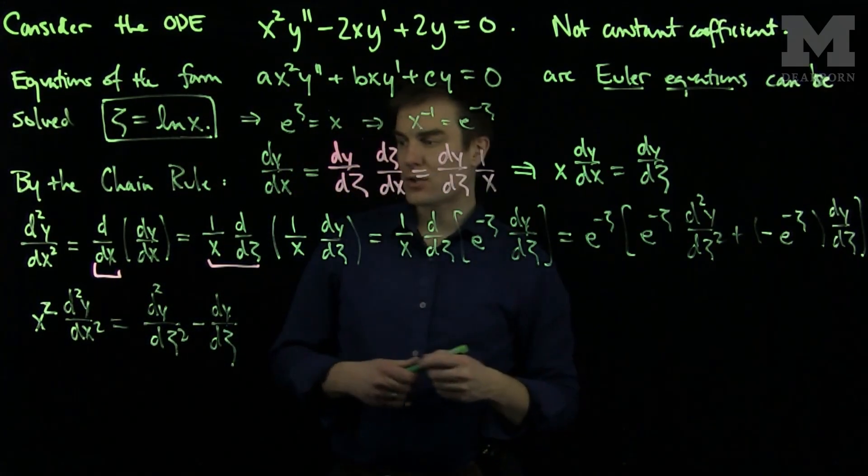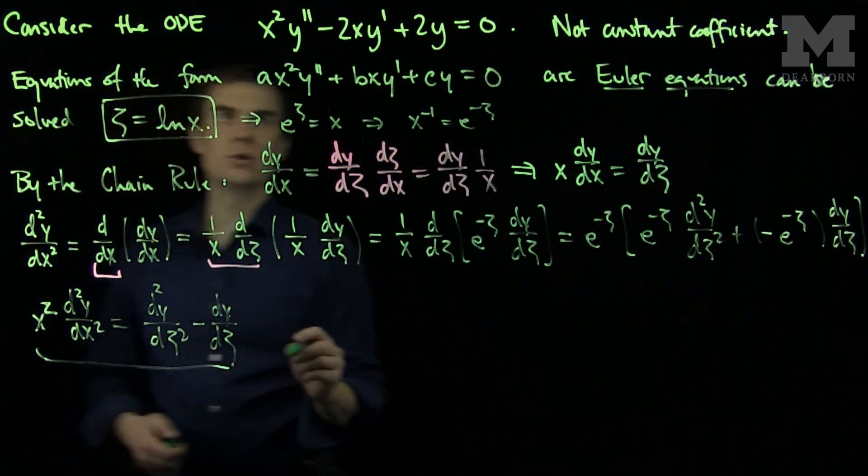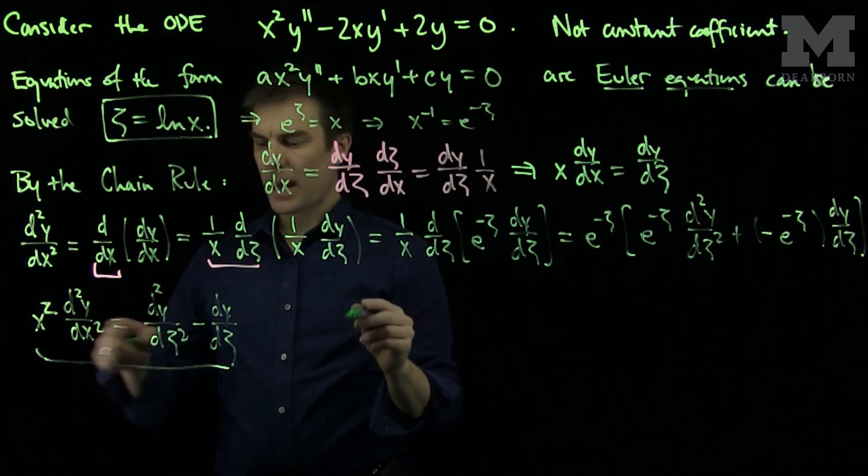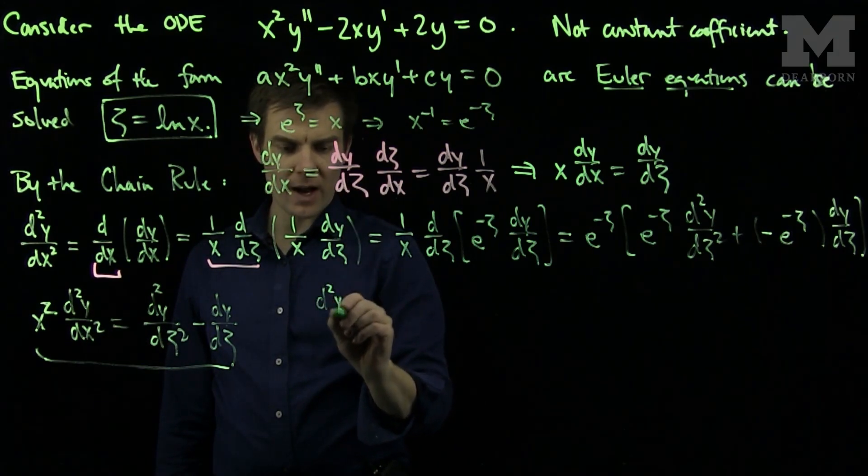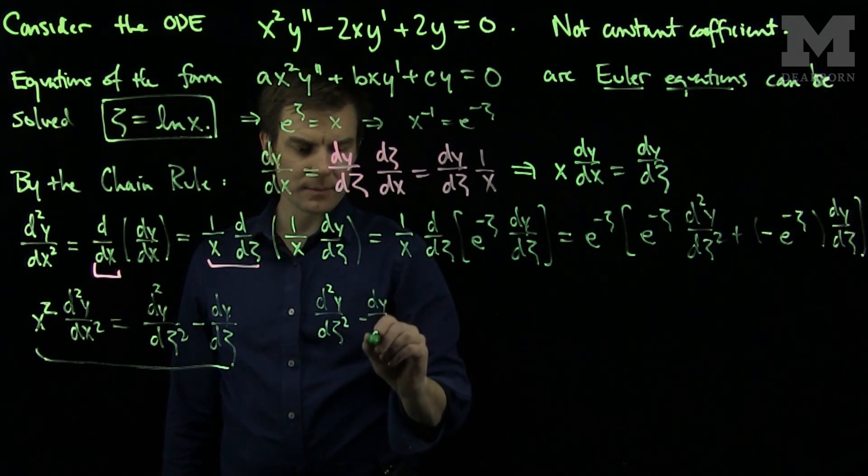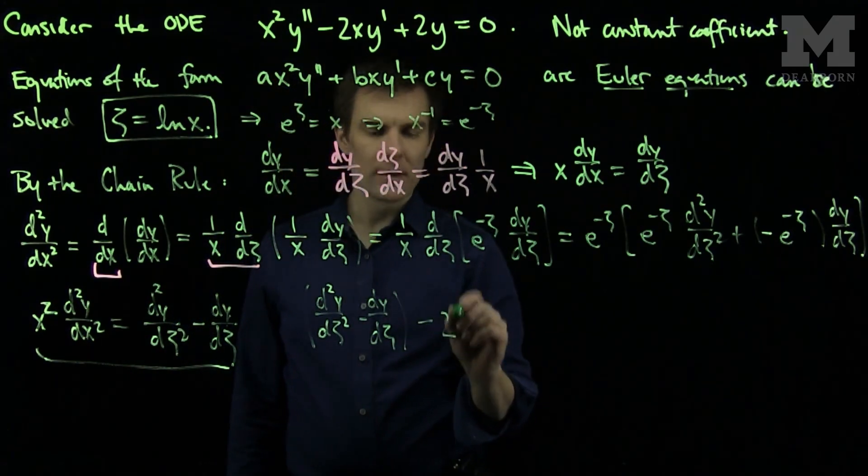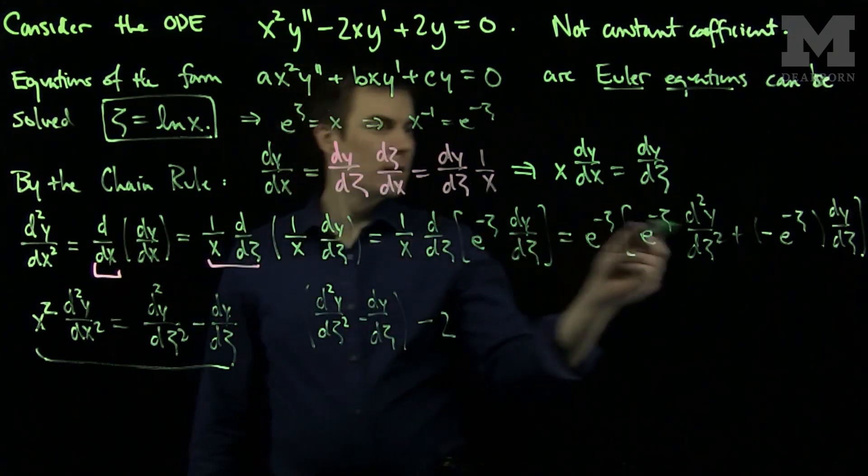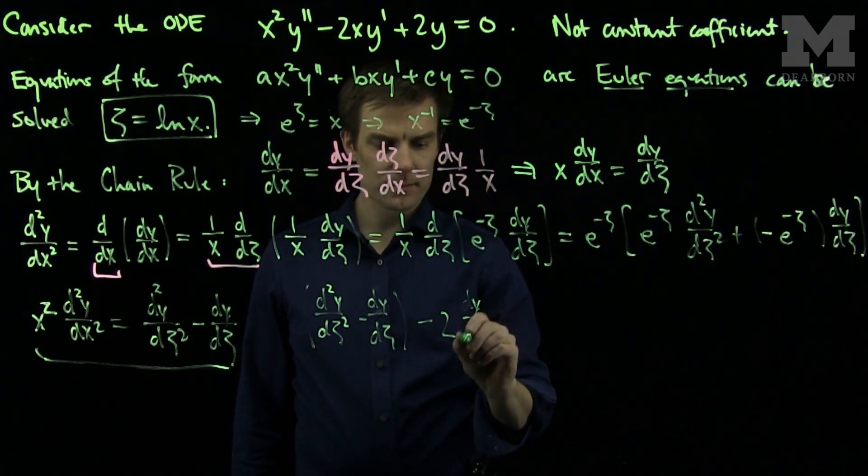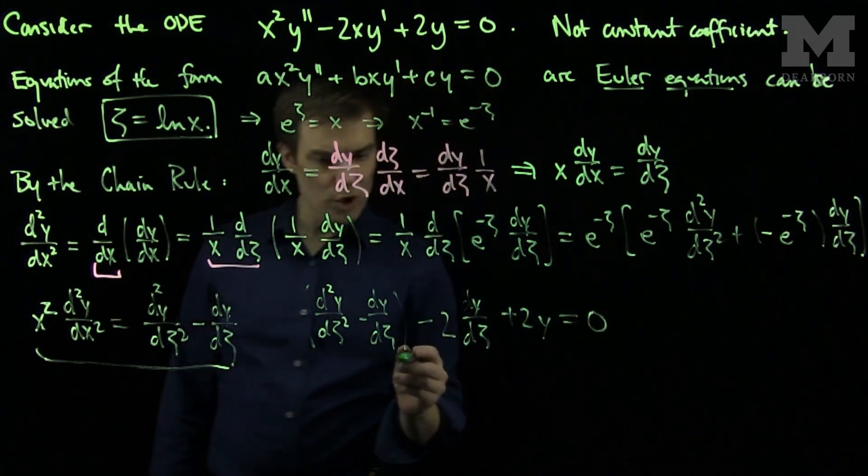Now we can use these two differential ideas to solve our original problem. Our original problem now becomes, we have an x squared y double prime. x squared y double prime is d squared y d zeta squared minus dy d zeta minus 2, and then I have a x dy dx which is a dy d zeta plus 2y equals 0.